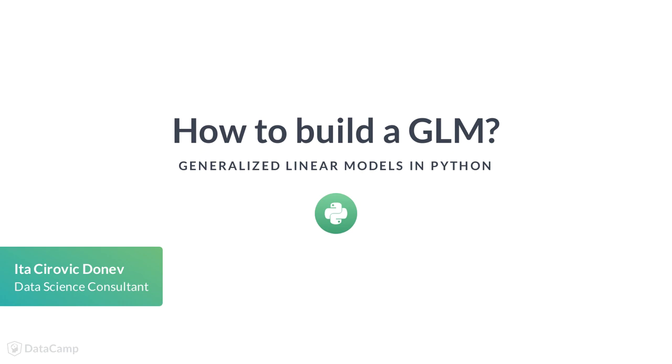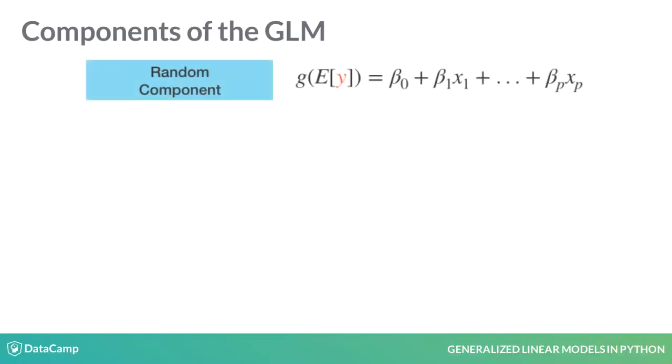The exponential family includes Gaussian, Binomial, and Poisson, among others. There are three components of GLM.